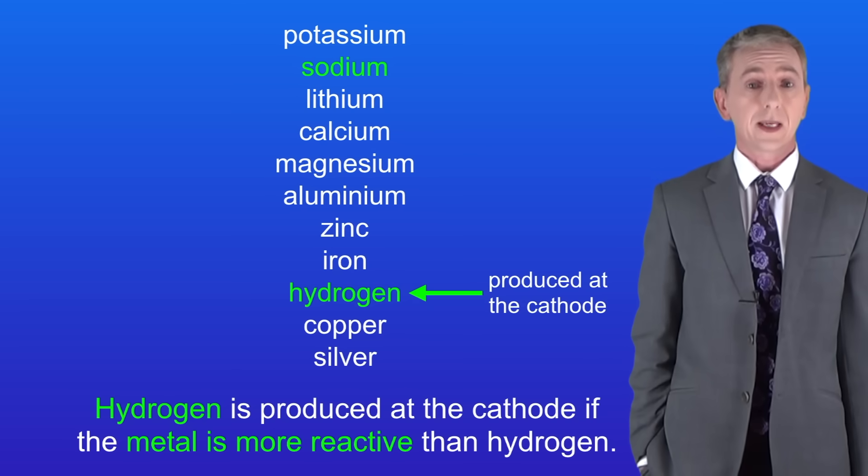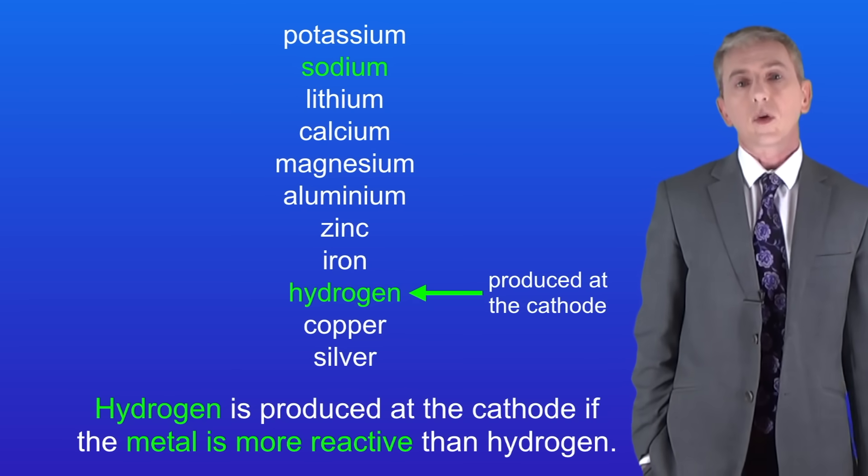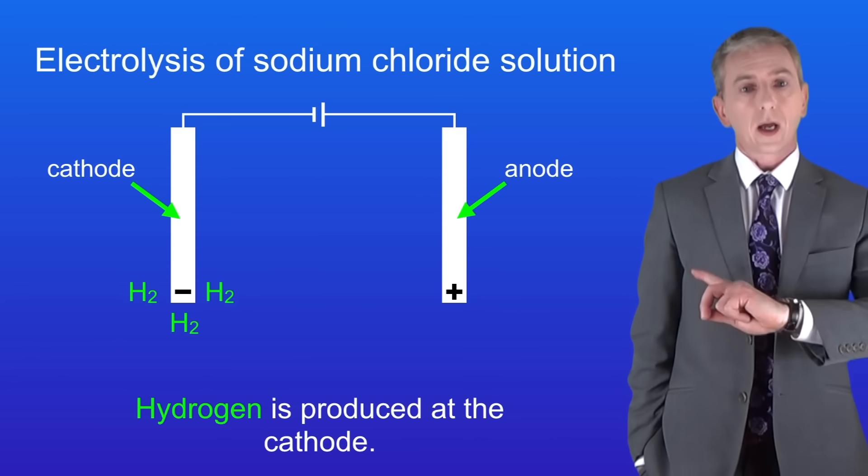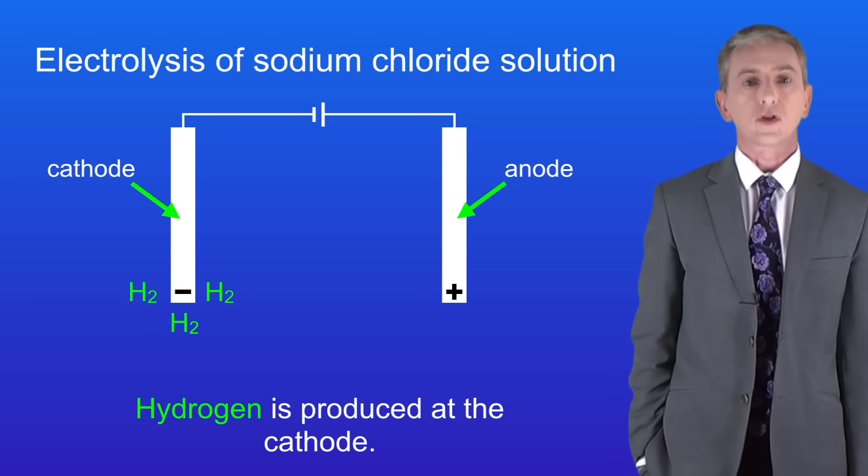As you can see, sodium is more reactive than hydrogen, so that means that hydrogen will be produced at the cathode. So here's the cathode and we can see hydrogen gas is being produced.